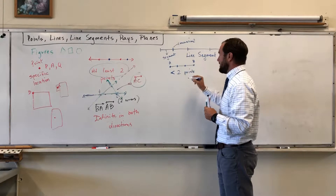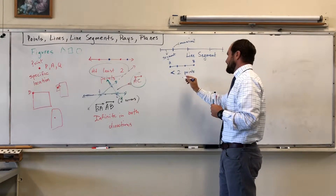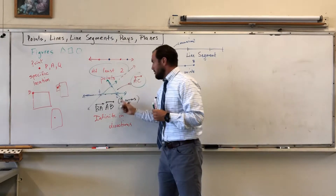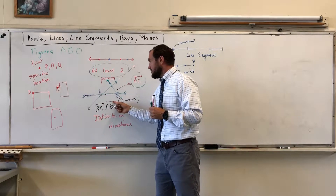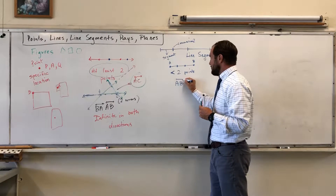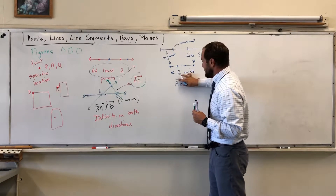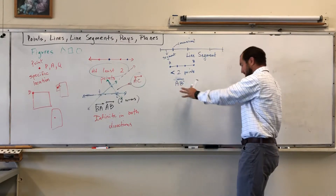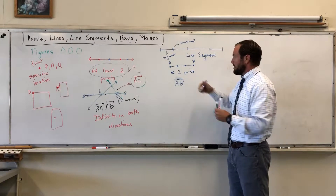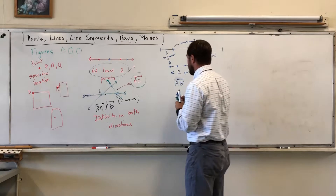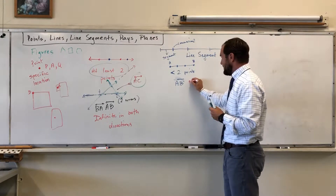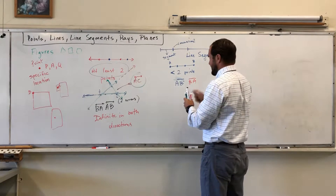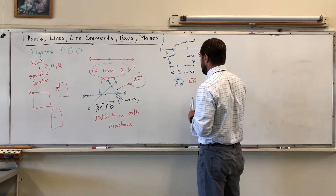You can label a segment with letters. For a line you give the symbol with two arrows. For a segment, you use a line with no arrows on it — just a flat line over AB — meaning you're talking about AB as a segment. You can also say BA; that's the same.